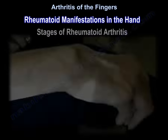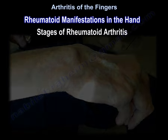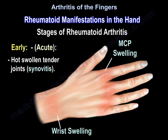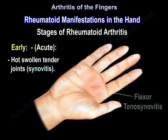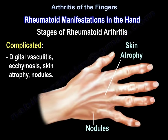The stages of rheumatoid arthritis of the hand begin with early acute: hot, swollen, tender joints with synovitis. It can affect the wrist joint, causing wrist swelling or MCP swelling. It can also have flexor tenosynovitis. The disease can be complicated by digital vasculitis, ecchymosis, skin atrophy, and nodules.